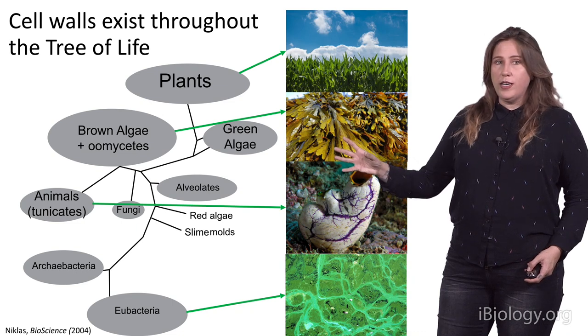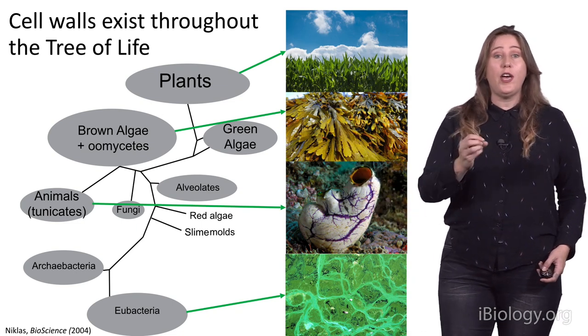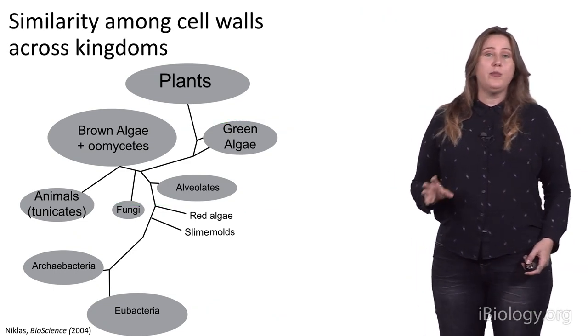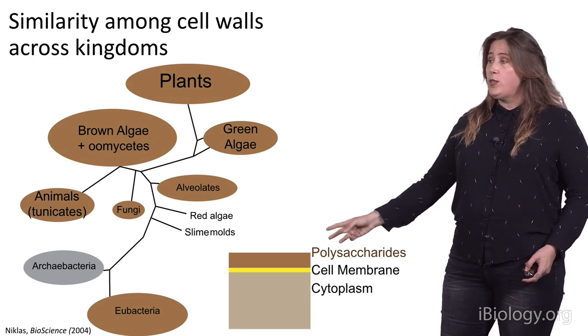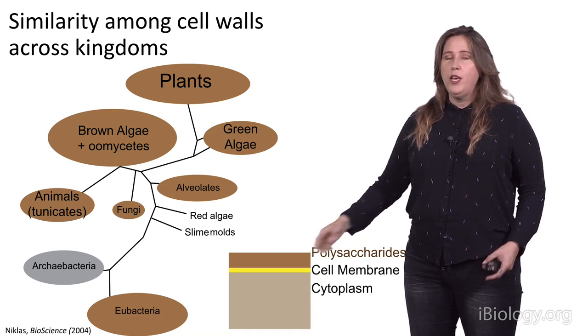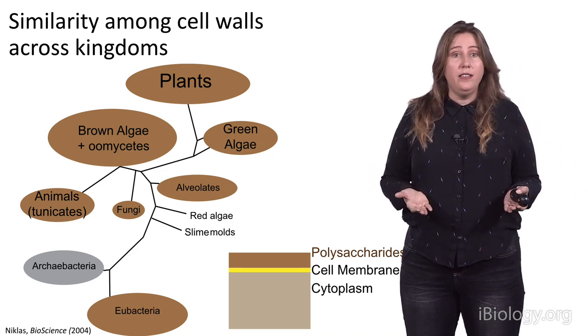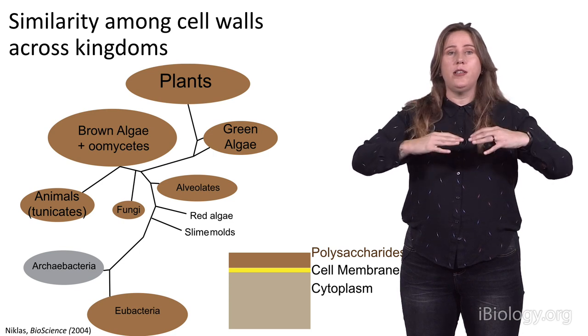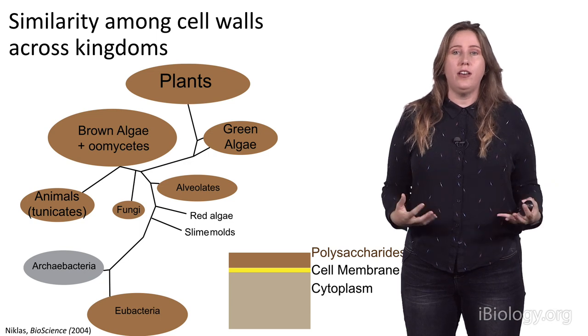So, all of these organisms have cell walls. Is there anything in common with the type of cell walls that they have? Indeed, what we can see is that all the groups that I'm going to highlight here in brown actually have cell walls that are mostly made of extracellular polysaccharides. So, what that means is that you have the inside of the cell covered by a cell membrane, and that the material that's being produced by that cell to make its cell wall is actually going up above the membrane and sort of existing what we might think of as the exterior of the cell.